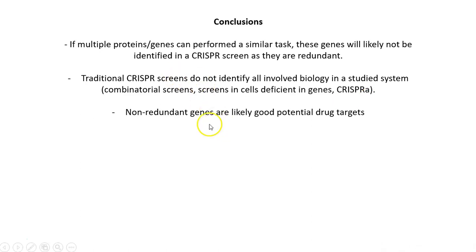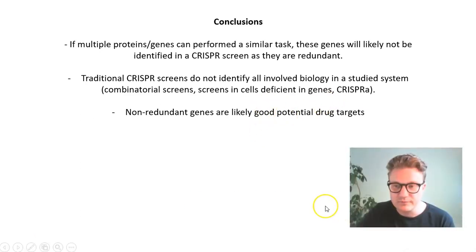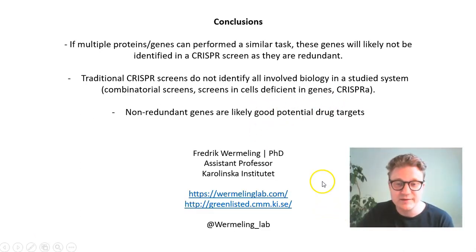Combining CRISPRa — which activates instead of knocking out or inhibiting genes — with CRISPR cut or CRISPR inhibition screens could really give you an increased biological understanding. Finally, the main take-home is that although we only find non-redundant genes, they're likely going to be good potential drug targets, because we already know that knocking them out affects the phenotype you're studying. An inhibitor targeting the same gene is likely a good way of suppressing that, though of course not all proteins are good drug targets per se.